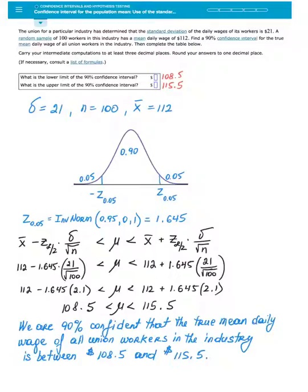First, let's extract the information we are given. I know that the standard deviation for the population is 21, the sample size is 100, and the sample mean is 112.